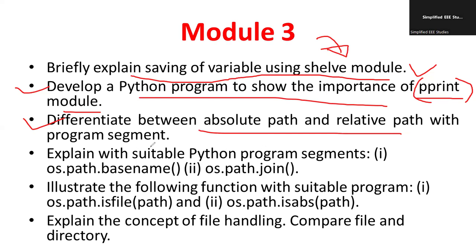Differentiate between absolute path and relative path with the help of suitable program segments — two statements and two examples are more than sufficient depending on marks. Also, explain with suitable Python program segments: os.path.basename(), os.path.join() for joining paths, os.path.isfile(), and os.path.isabs() — illustrating these functions with examples.